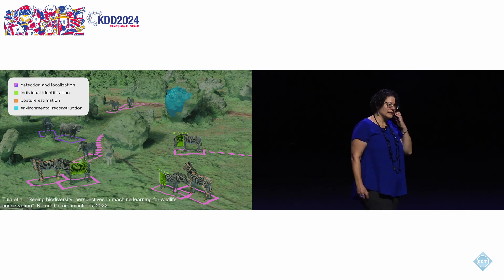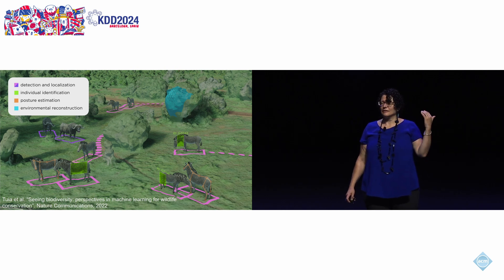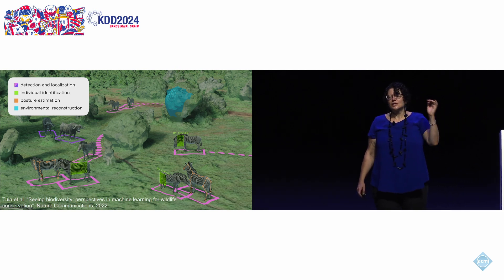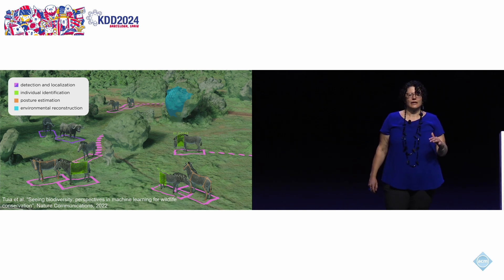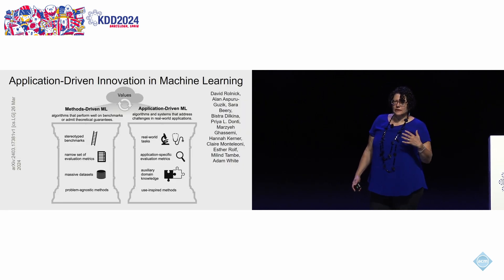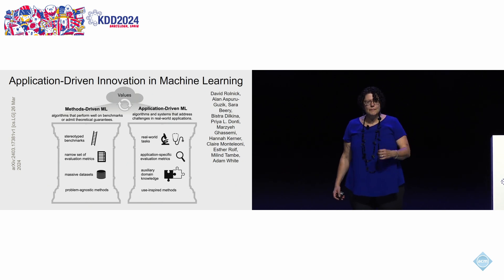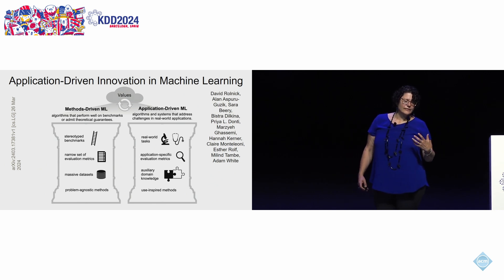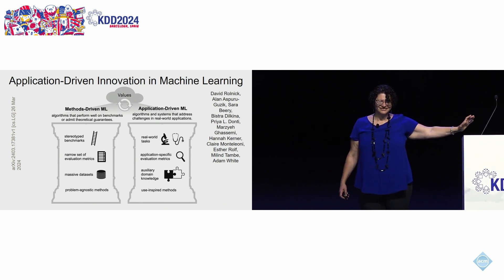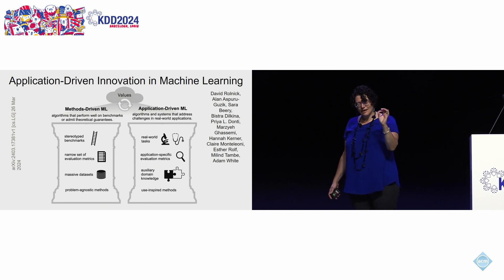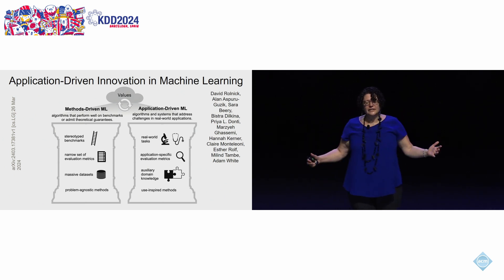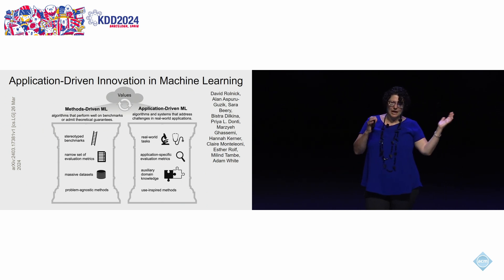So we're done — we have all these methods. Again, not quite. The problem is that the overwhelming majority of these methods have been developed in total absence of any context of biodiversity applications. The typical approach for developing machine learning methods is to have stereotype benchmarks, use a very narrow set of evaluation metrics — variations of accuracy — on large datasets with problem-agnostic approaches.